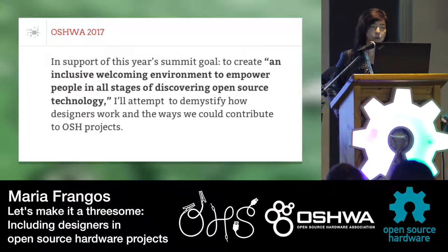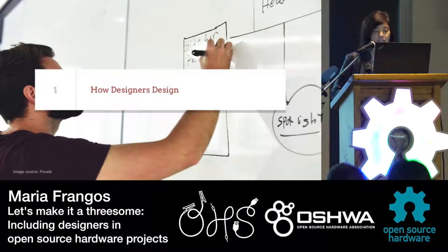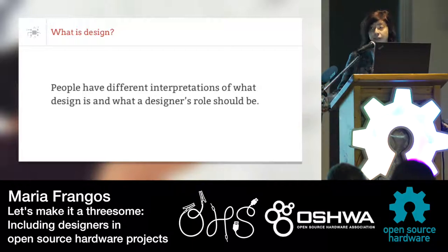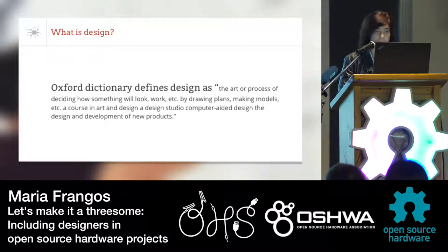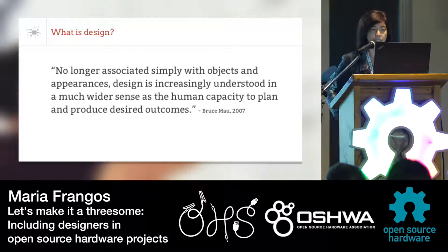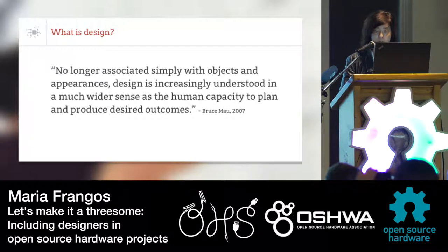In support of OSHWA's goal to create an inclusive, welcoming environment to empower people in all stages of discovering open source technology, I'm going to attempt to demystify how designers work and the ways we can contribute to OSH projects. There are many different interpretations of what design is. Oxford Dictionary uses a very narrow definition — conceiving and producing a plan or drawing of something before it's made. But I prefer Bruce Bowne's take, moving away from aesthetics toward design as a human capacity to plan and produce desired outcomes.